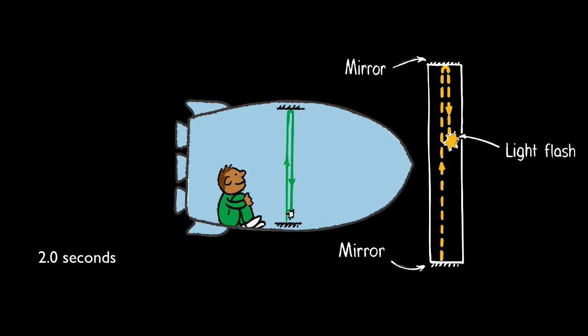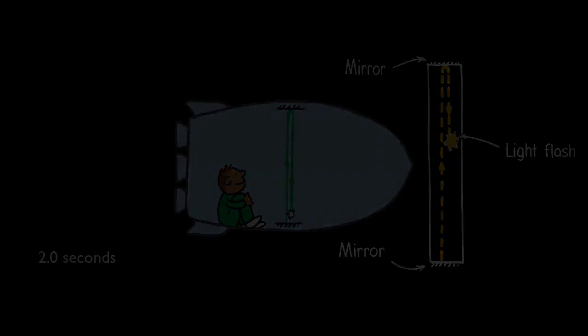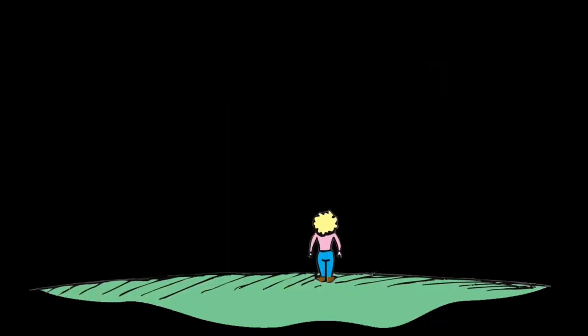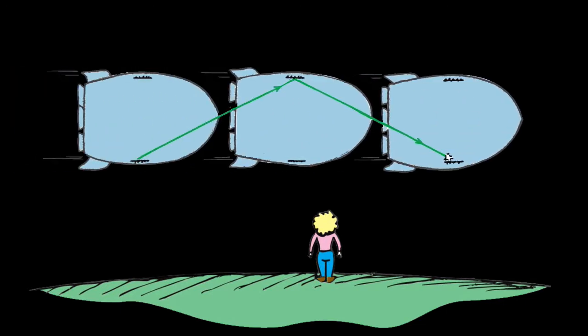Now, your ship, which happens to be transparent, whizzes past a planet where an observer notes something very different. Because the ship is moving so fast, she sees the light beam travel at an angle, which means it has farther to travel. Because the speed of light is constant, that means it will take more time. She measures the time it takes for the light to go up and down, and she finds that to be 2.8 seconds.